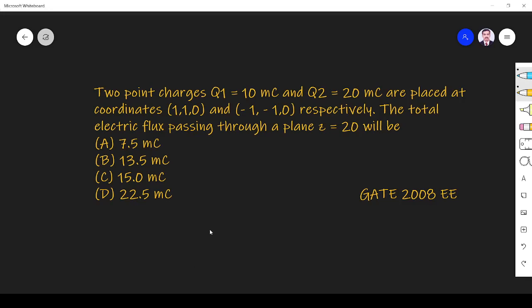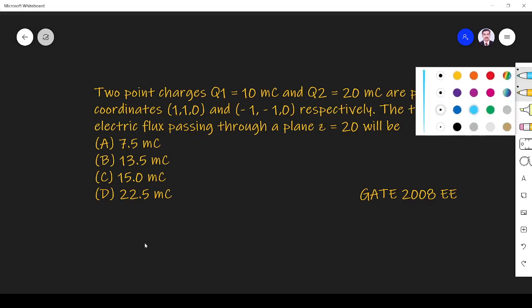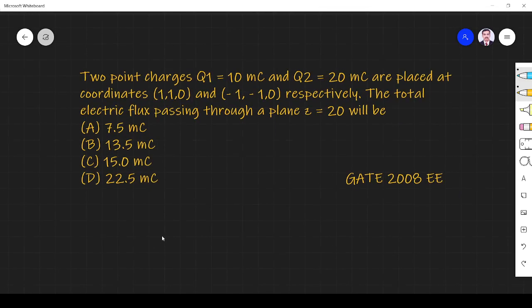Hi friends, in this video let us solve an electrostatics related question asked in GATE 2008. The question is: two point charges q1 and q2, where q1 is 10 millicolum and q2 is 20 millicolum, are placed at the coordinates (1,1,0) and (-1,-1,0) respectively.